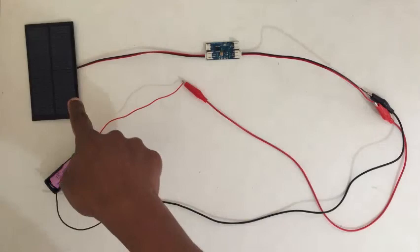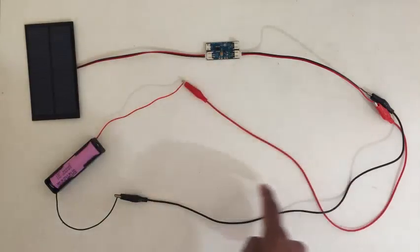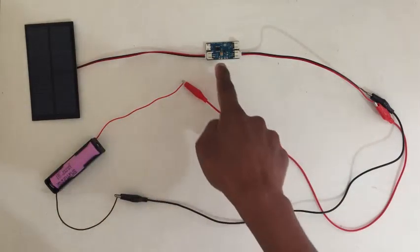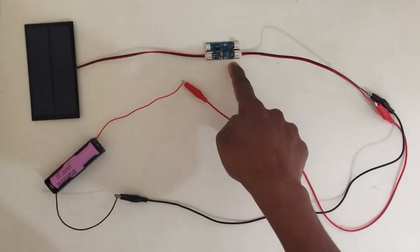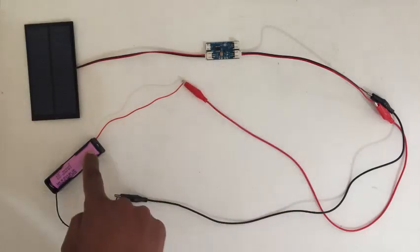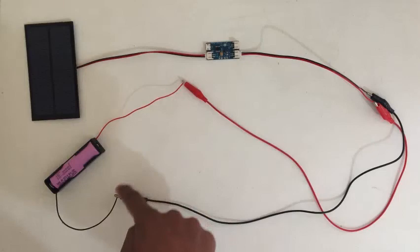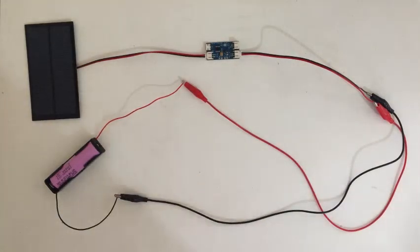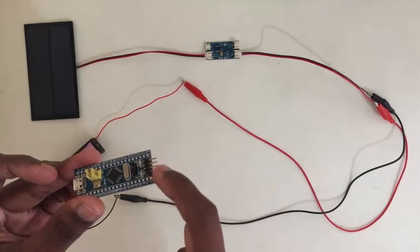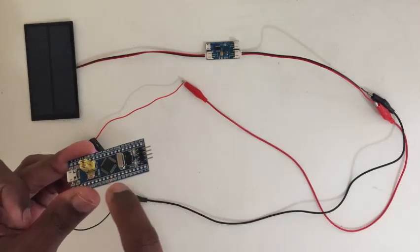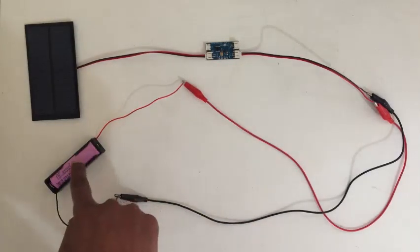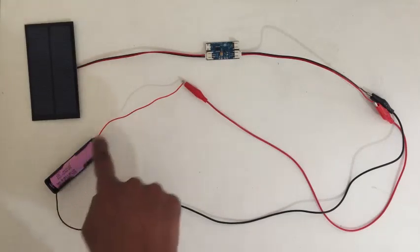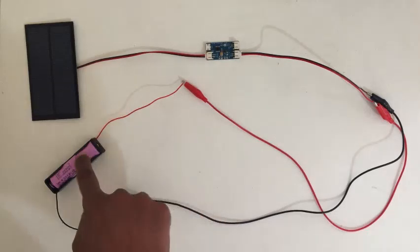The basic setup is like this: solar panel, charge controller, and goes to the battery. This charge controller can provide over-voltage protection, but it doesn't have under-voltage protection. That means from the battery, if you take power to the microcontroller, you can straight away connect and the regulator provides 3.3 volt. But if it goes below 3 volt, it will still take the current and it will damage the battery.